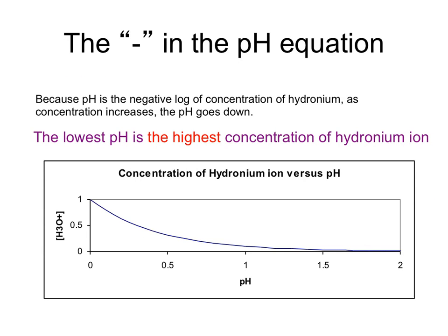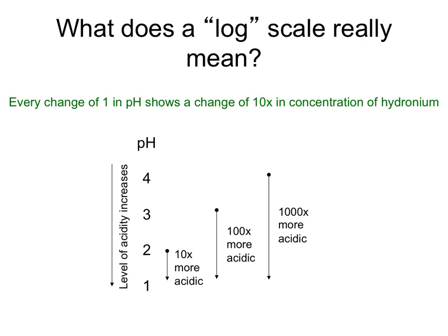Look at the graph below. You will see that there is an inverse relationship between hydronium ion concentration and pH. As the pH value increases, you will see that the hydronium ion concentration decreases. Every change of 1 in pH shows a change of a factor of 10 in concentration of hydronium ions.